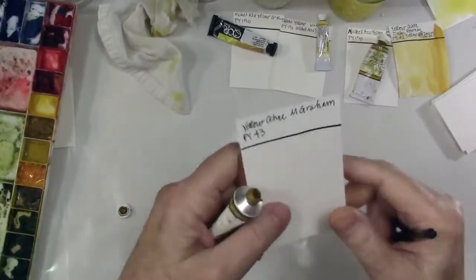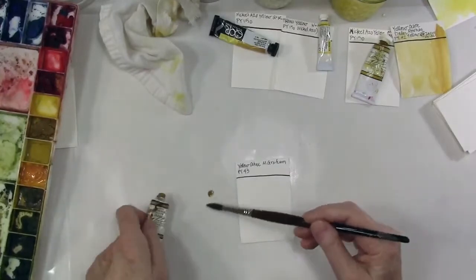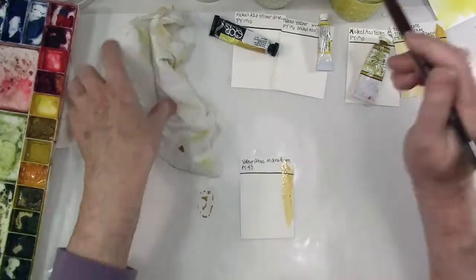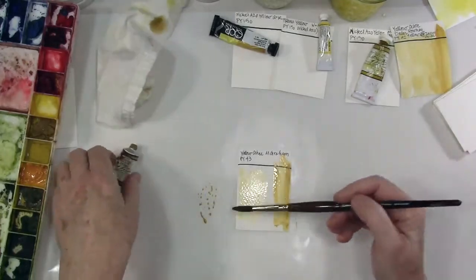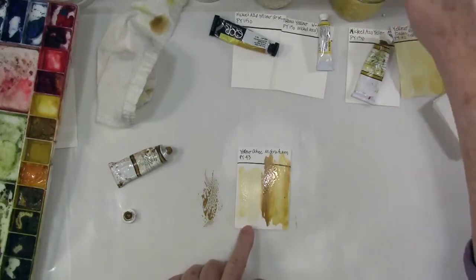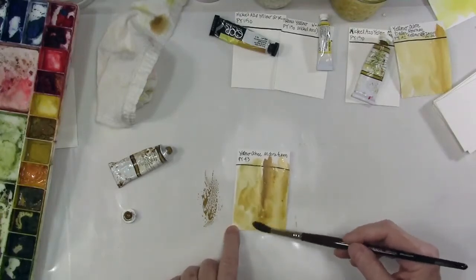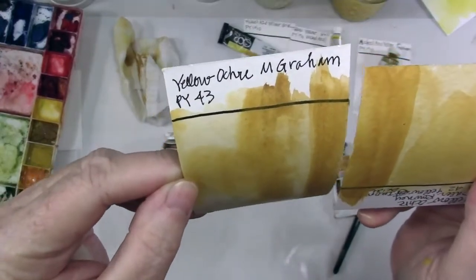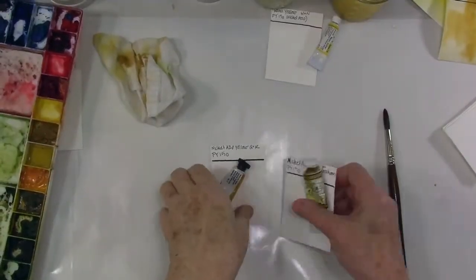Here's the M Graham. Remember M Graham is a little different because they use honey as a binder. I don't see much difference between these two colors, but if you remember that boho green from the other day, this would be a great way to get a boho type of green by mixing this ochre with maybe some viridian or another green. You're going to wind up with a color that is like that boho green, but that's an exact match again.